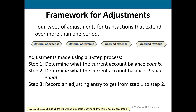We will look at this framework for adjustments, which includes a three-step process: first, determine what the current balance equals; second, determine what the current balance should equal; and then record an adjusting entry.